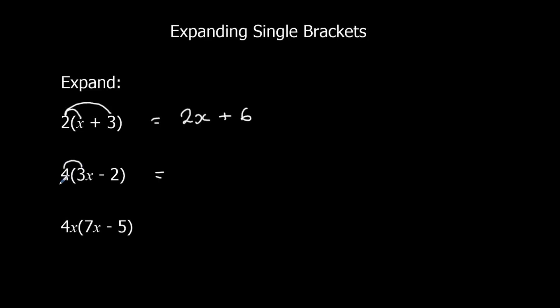Same again, 4 times 3x. 4 lots of 3x, that's 12x. And 4 times negative 2 makes negative 8.